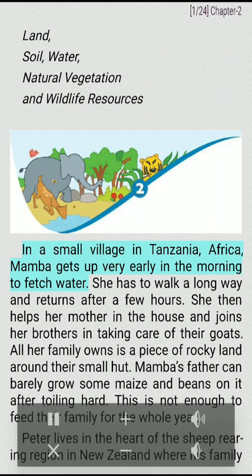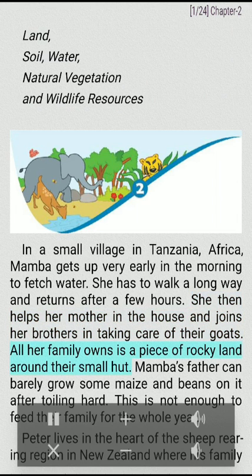In a small village in Tanzania, Africa, Mamba gets up very early in the morning to fetch water. She has to walk a long way and returns after a few hours. She then helps her mother in the house and joins her brothers in taking care of their goats. All her family owns is a piece of rocky land around their small hut. Mamba's father can barely grow some maize and beans on it after toiling hard. This is not enough to feed their family for the whole year.